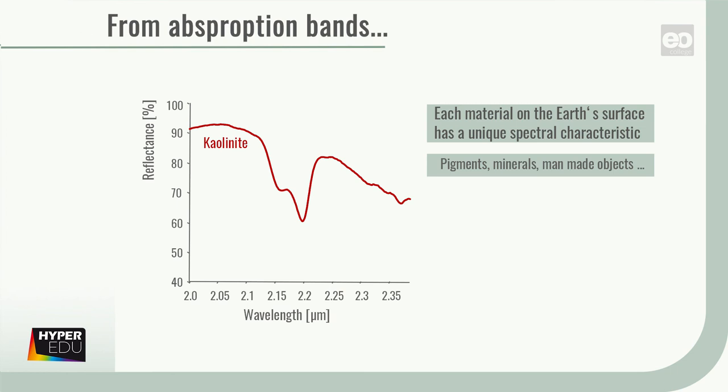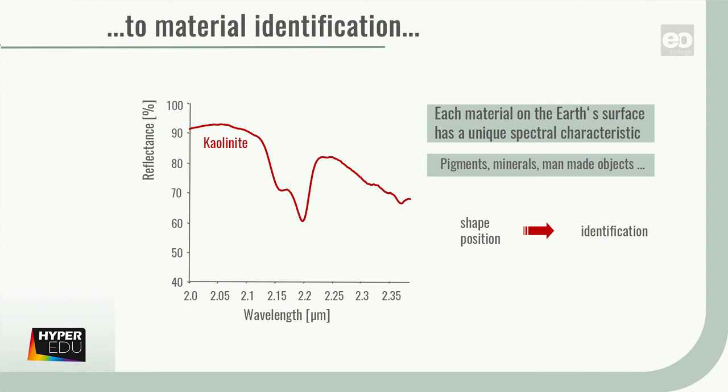Each material on the Earth's surface has a unique spectral characteristic. As explained previously, electronic and vibrational processes result in so-called absorption features, spectral absorption minima and maxima. The shape and position or wavelength of these features allows the identification of materials, their depth, to some extent the quantification. Oh, by the way, for the analysis of spectral features, a hyper-spectral resolution is required.